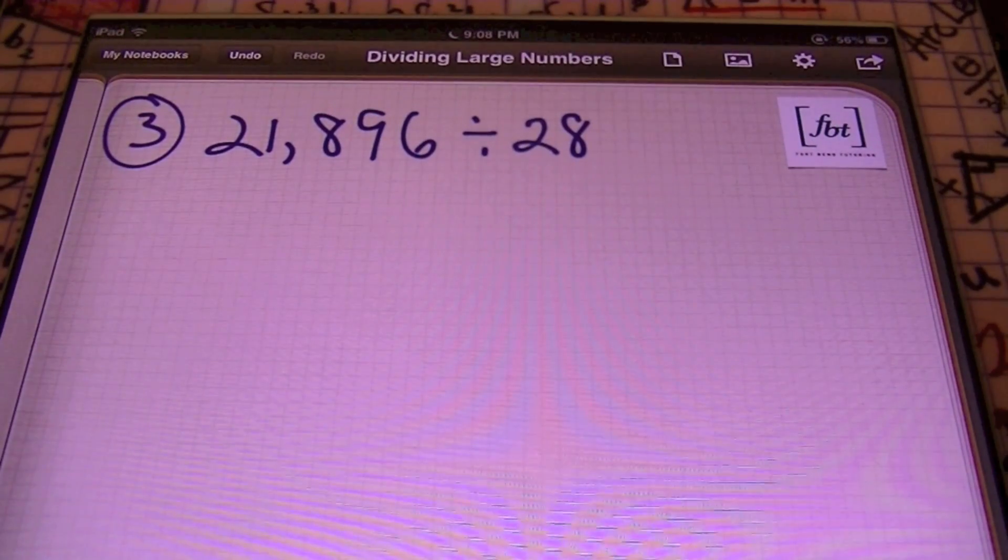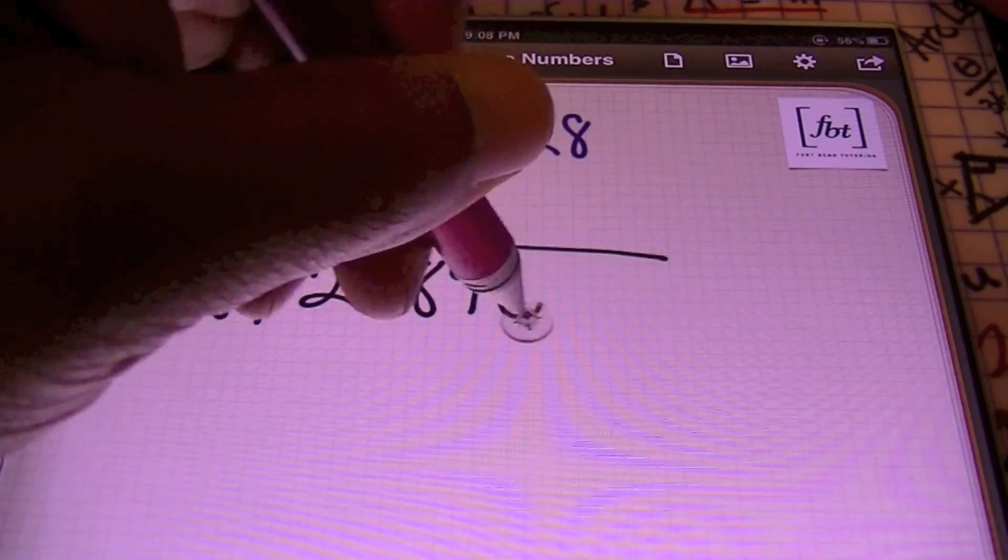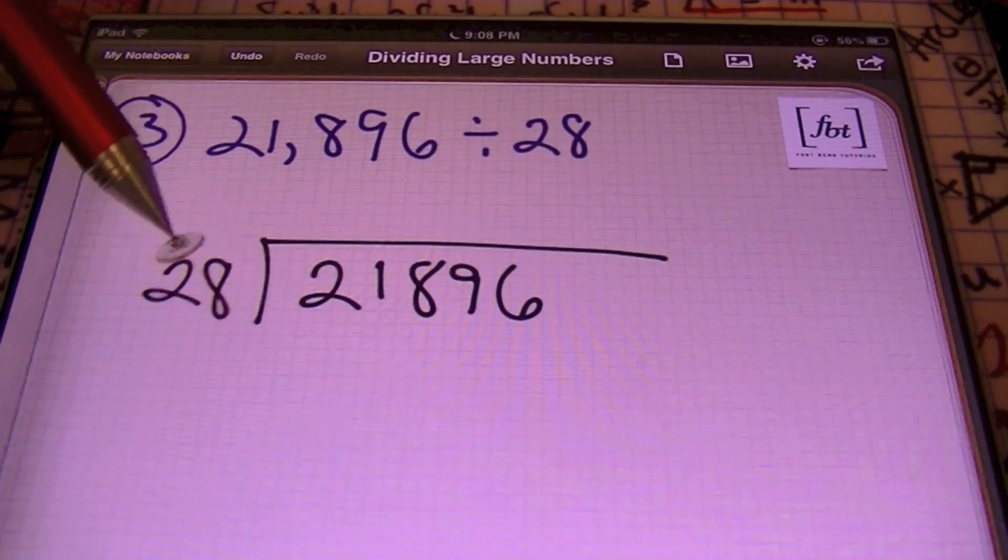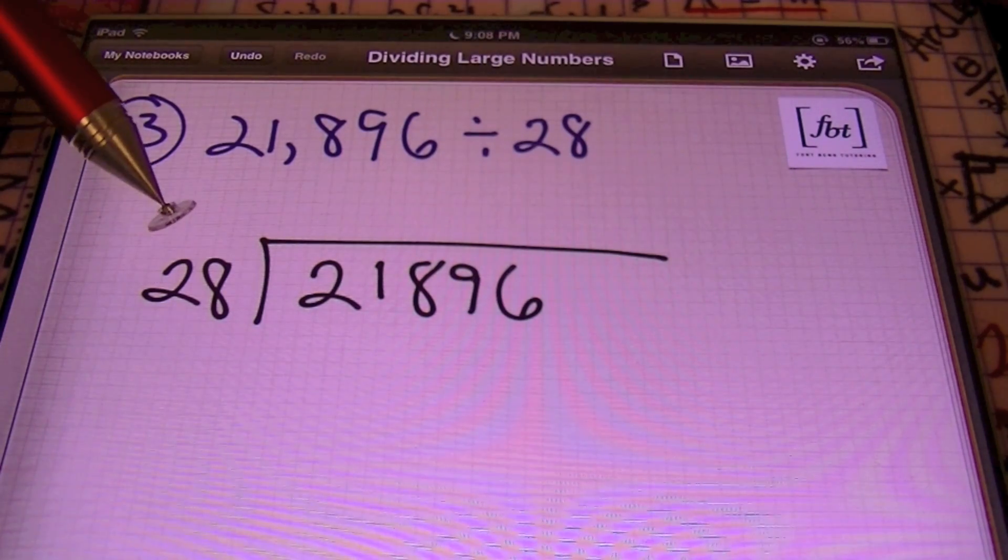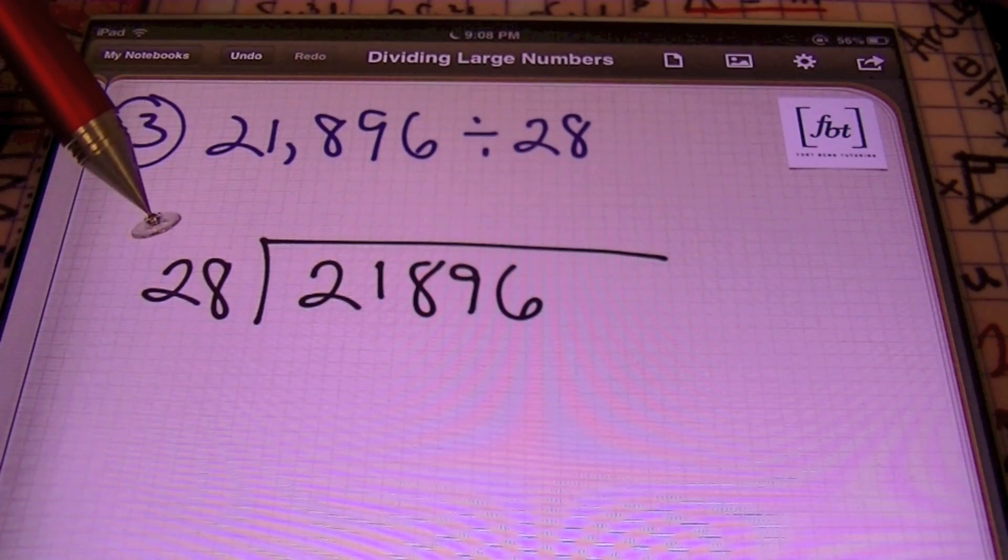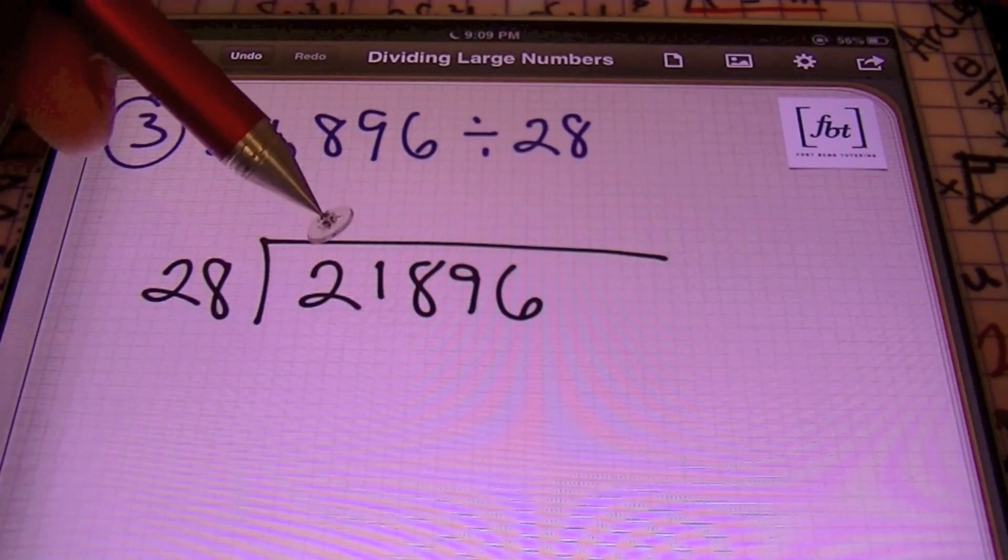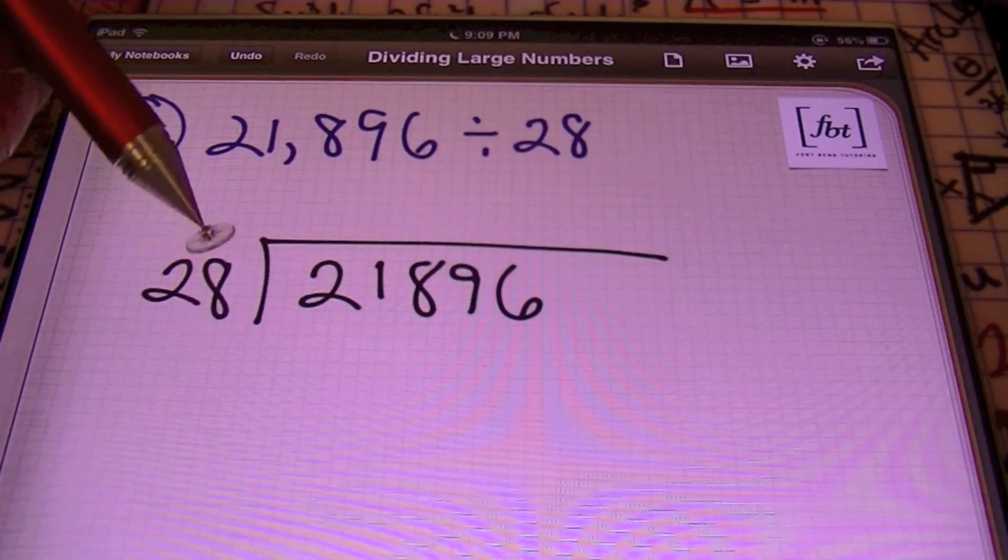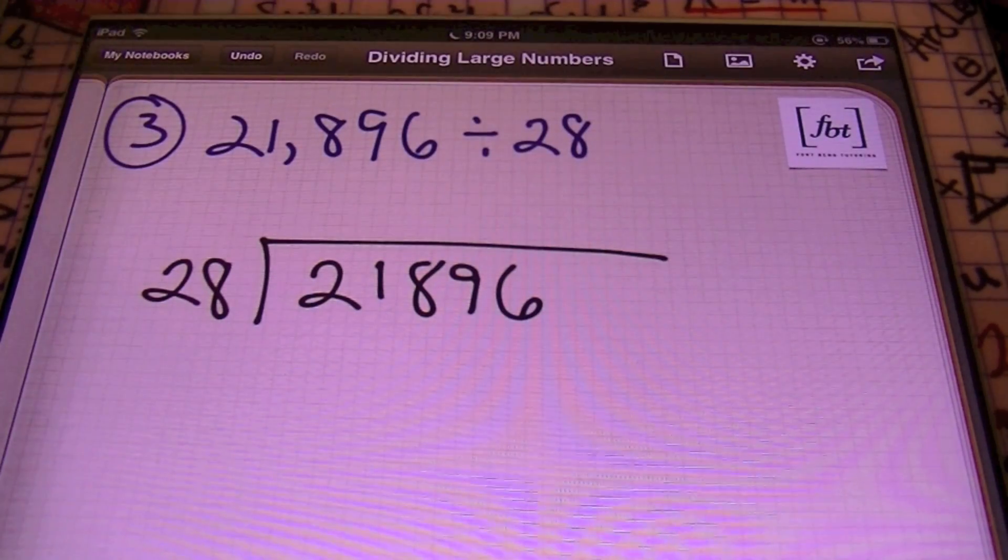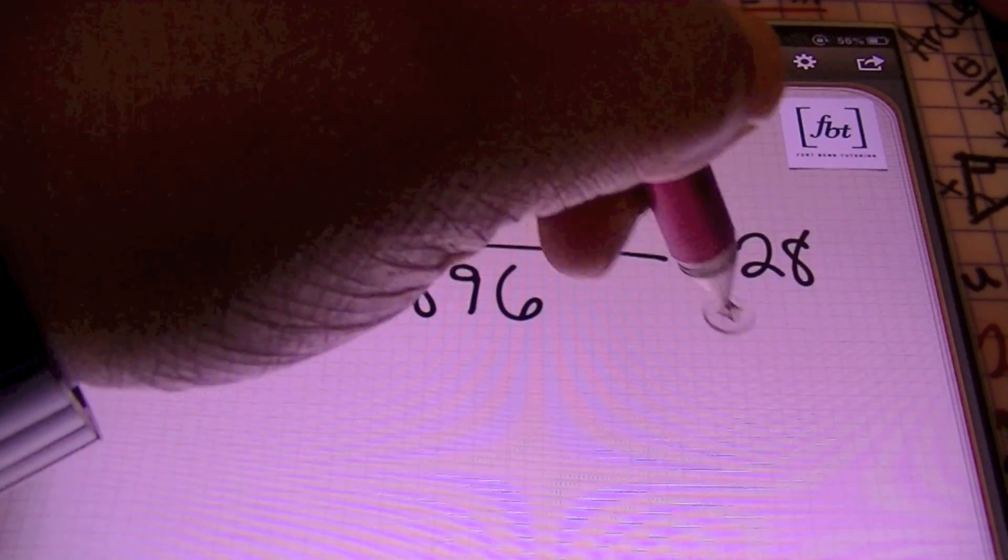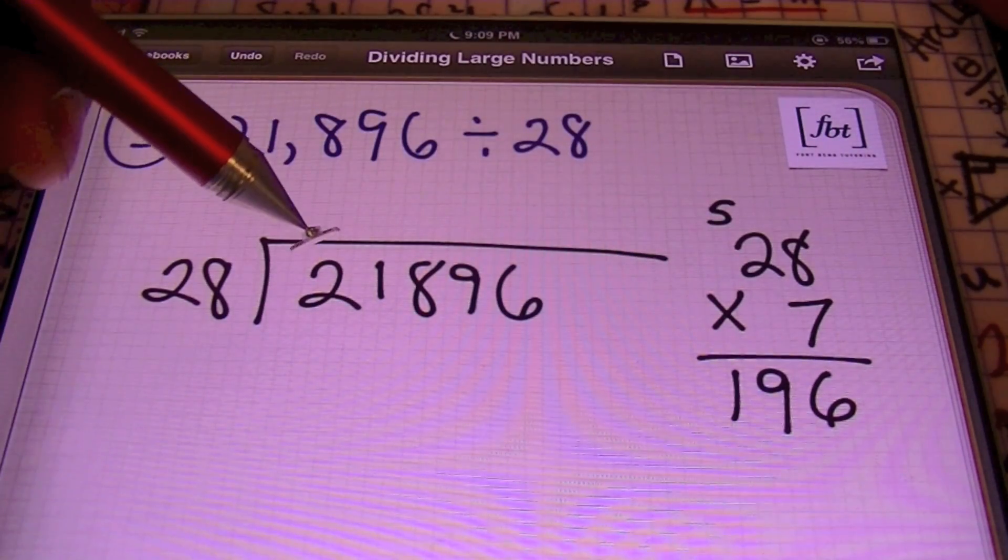Problem number three, we have 21,896 divided by 28. So we'll set up our long division as 28 going into 21,896. I know that this 28 is too big to go into 2. It's way too big to go into 21. So we'll see if 28 will go into 218. But I'm not that familiar with the multiples of 28. So what I can do in this case, I'll choose the method of rounding this answer up. So 28 is close to 30. And I do know that 30, that 3, will be able to go into 218 seven times. Why? Because 3 times 7 is 21. So that's how I use it. So knowing that 28 is close to 30, and that first digit in 30 is 3, 3 times 7 gives me 21. So that gives me an idea what I should try. So let's see what 28 times 7 will give us. So we'll have 28 times 7. This gives me 56. I carry the 5. That's 14 plus 5 gives me 196. So 196 is what I get, which is pretty close to that 218.